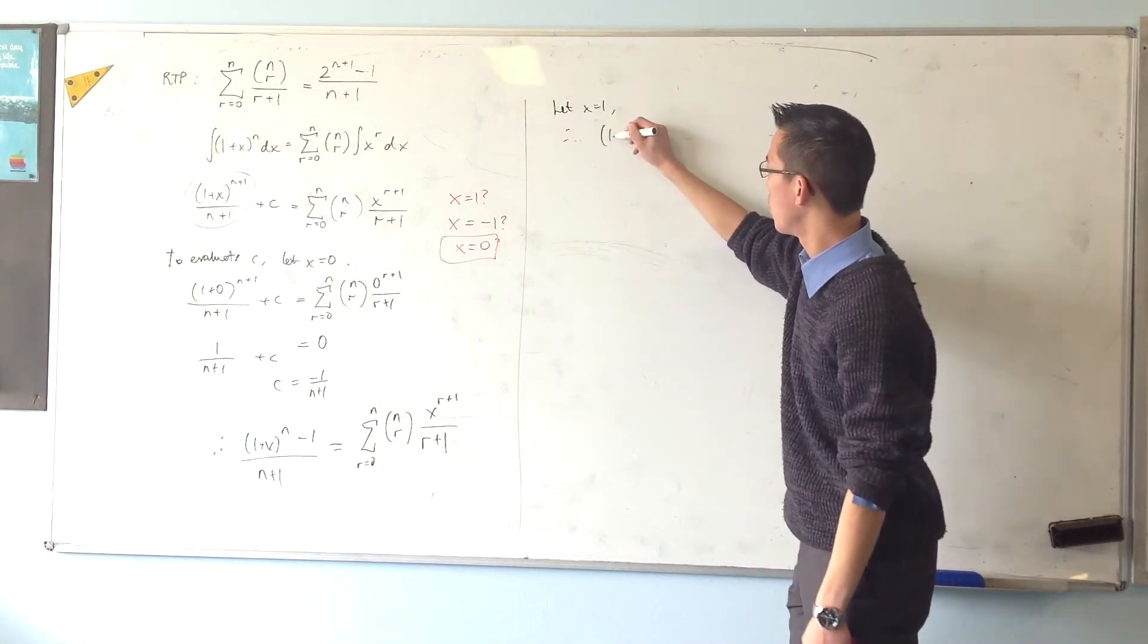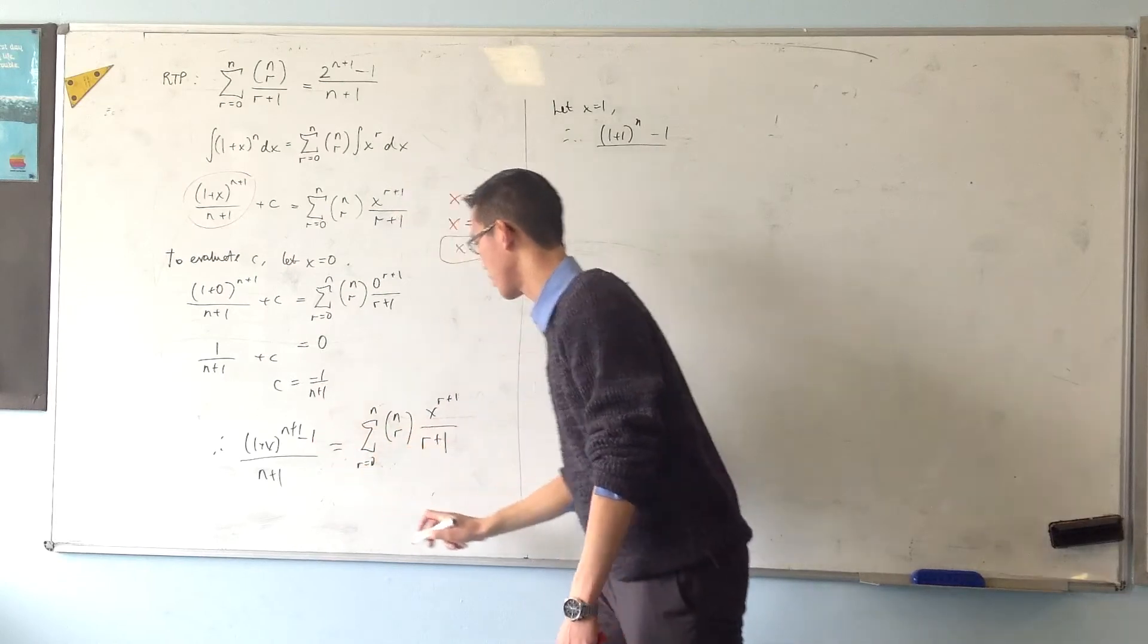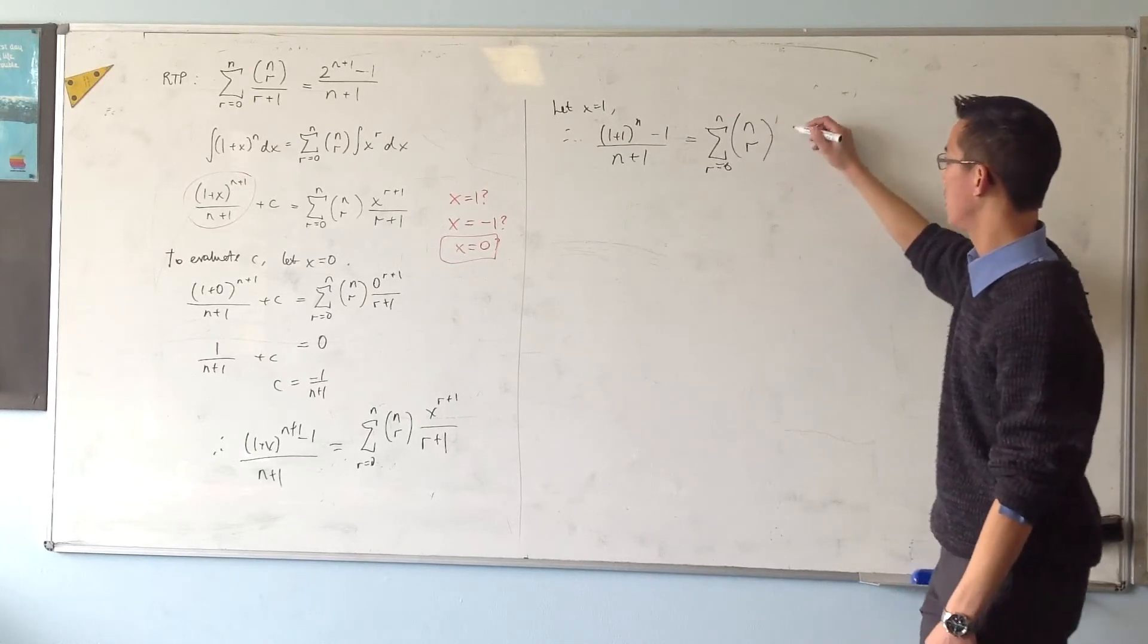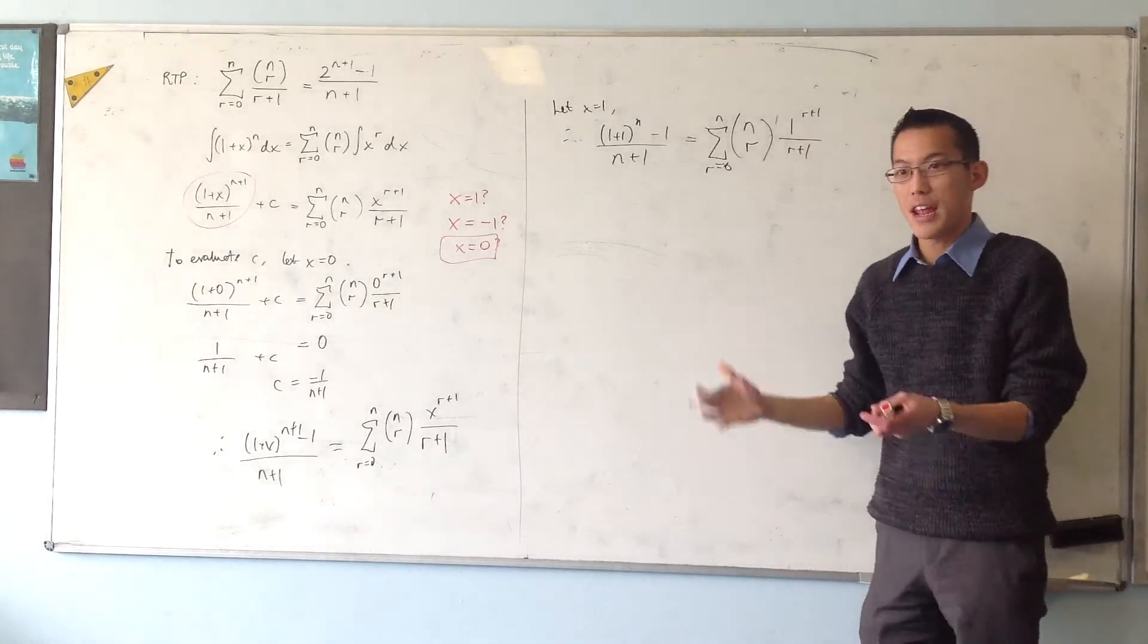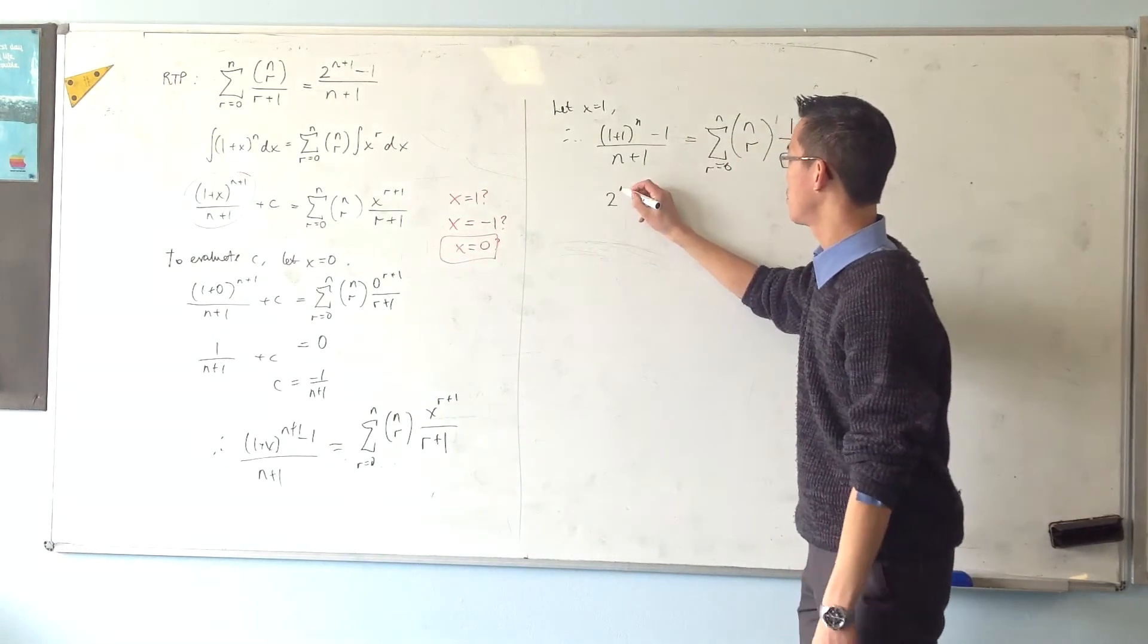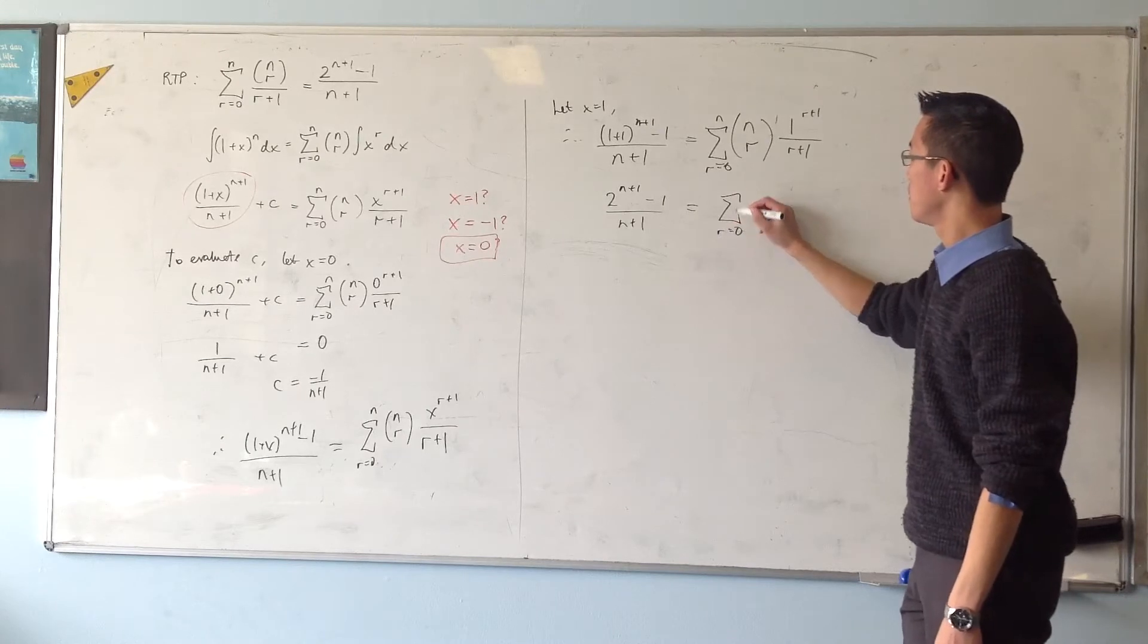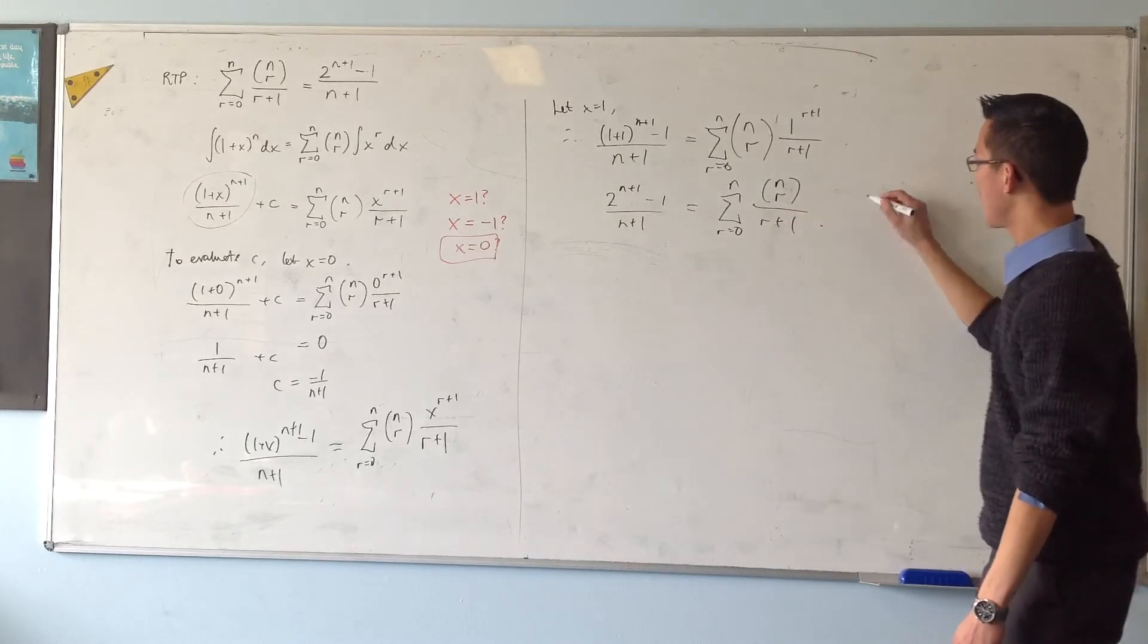So let x equal 1. Therefore, 1 plus 1 to the n plus 1, sorry, I'm missing a plus 1, minus 1 over n plus 1, equals the sum of 0 to n, n choose r over r plus 1, that's 1. Okay, so now that I've written that full out, I can basically go to this line. That's it. That's my 2. I keep forgetting to write it. Sorry. Minus 1, n plus 1. And because this numerator is just 1, I'll put that n choose r on the top, and I'm done.